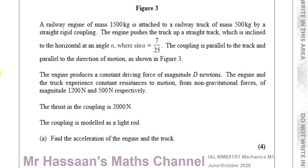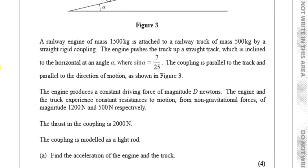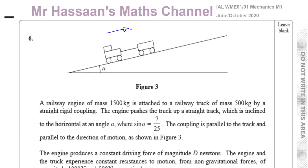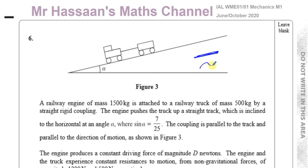We've got to find the acceleration of the engine and the truck first. A few points to note: this is a straight rigid coupling, meaning it's not like a string — it's like a rod, so it doesn't bend, buckle, or become slack.